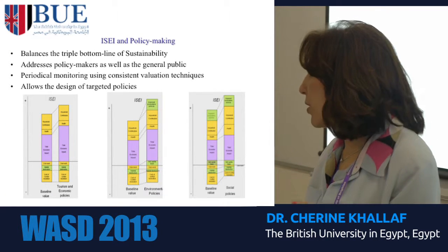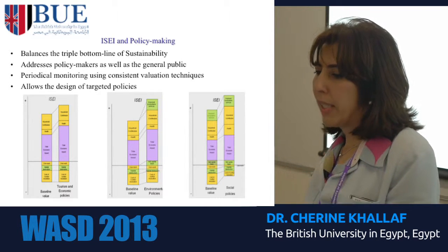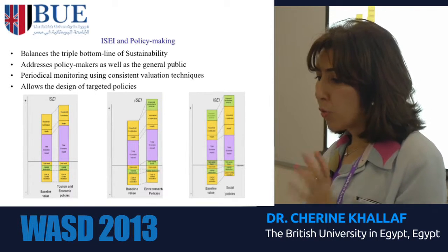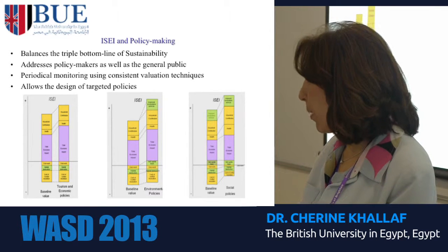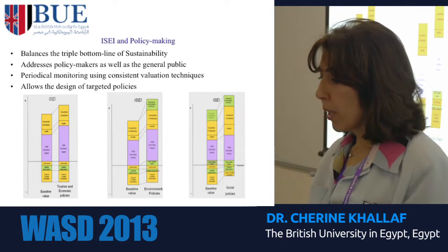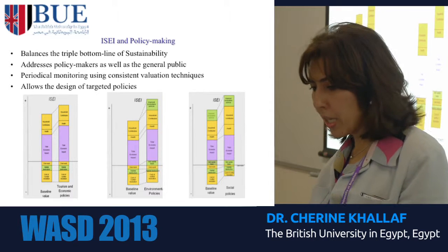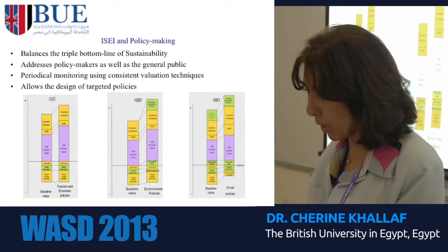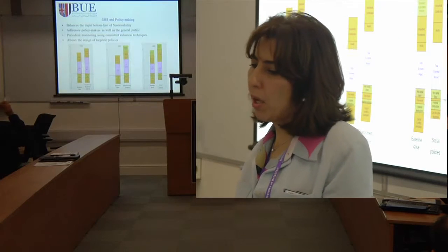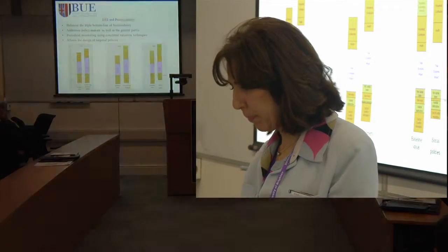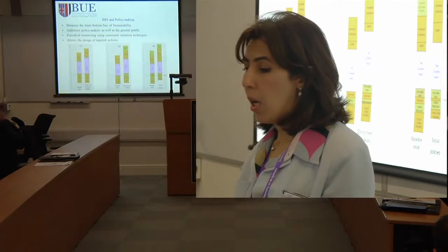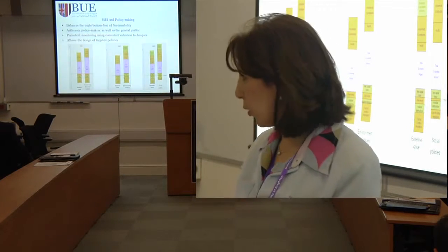The importance of this index is that it balances and accounts for the triple bottom line of sustainability. It addresses both policymakers and the general public using metrics known to both. Periodical monitoring using consistent valuation techniques would allow us to get better results, and it is suggested to be used to design targeted policies depending on the priorities of the different authorities — so you can measure what you are trying to achieve.